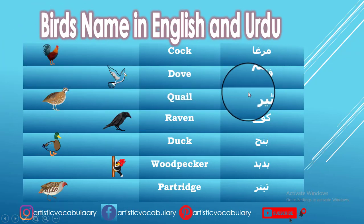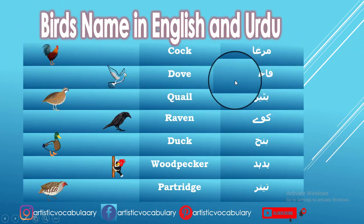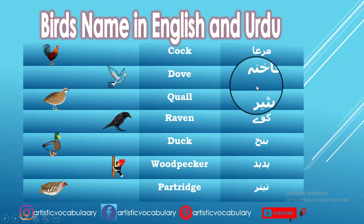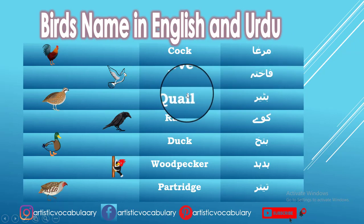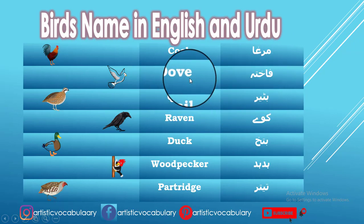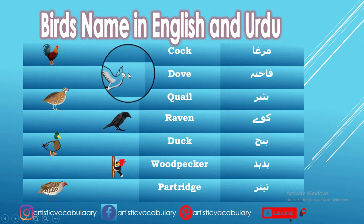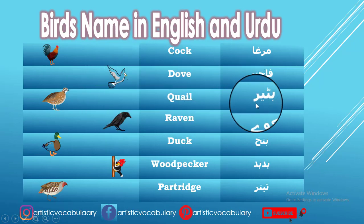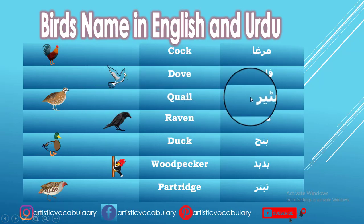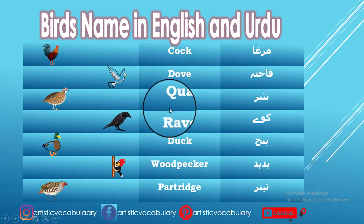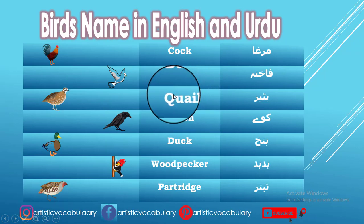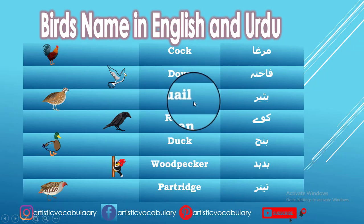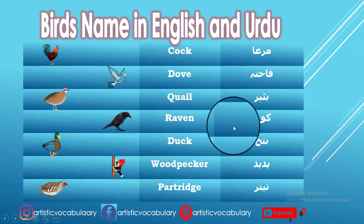Fakhtah — in English we call it Dove. Bater — in English we call it Quail.